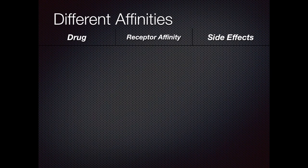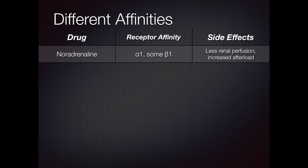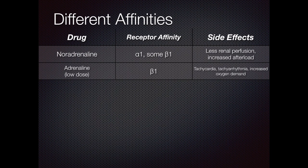Different effects occur on the body with each catecholamine because each has a different affinity for the receptors. Noradrenaline is mostly an alpha-1 agonist, but also somewhat beta-1. It can cause reduced renal perfusion in addition to its normal effects because of vasoconstriction activity, and increased afterload will then reduce stroke volume and increase oxygen demand. Adrenaline in low doses affects the beta-1 receptor. Its side effects are tachycardia, tachyarrhythmia, and increased oxygen demand.